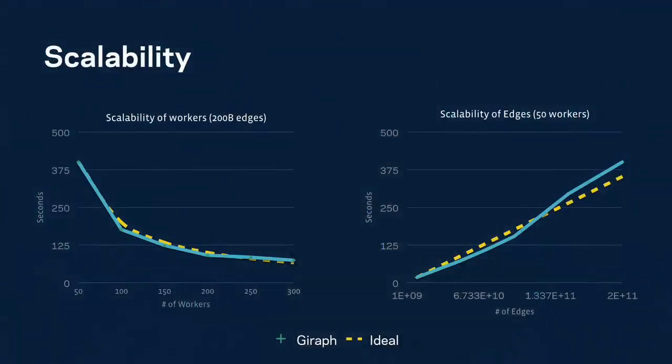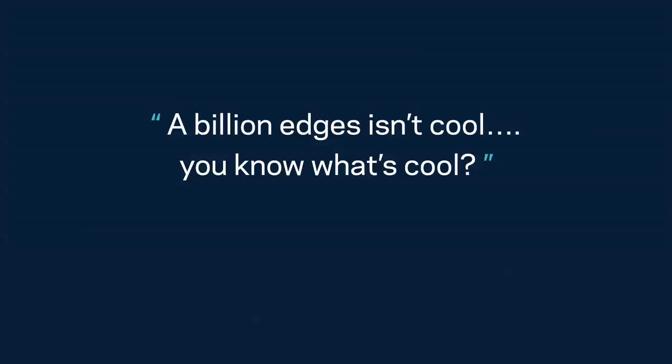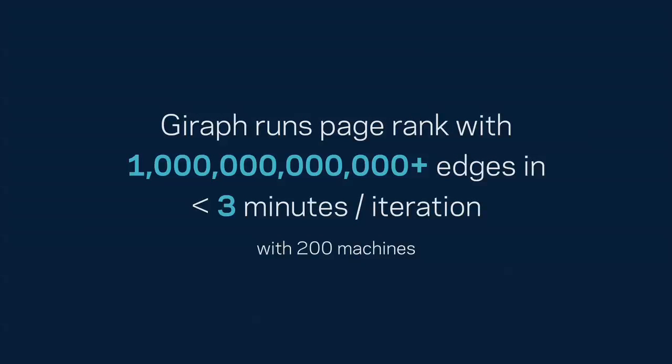The third reason is scalability. On the left chart, we fixed our problem size at 200 billion edges for one PageRank iteration and increased workers from 50 to 300 — Giraffe closely follows the ideal linear speedup curve. On the right graph, we fixed workers at 50 and increased problem size from 1 billion to 200 billion edges — Giraffe still follows the ideal curve. And to be honest, a billion edges isn't cool. You know what's cool? A trillion edges. Giraffe can run PageRank with a trillion social edges in less than three minutes per iteration with just 200 machines. That's a lot of zeros.